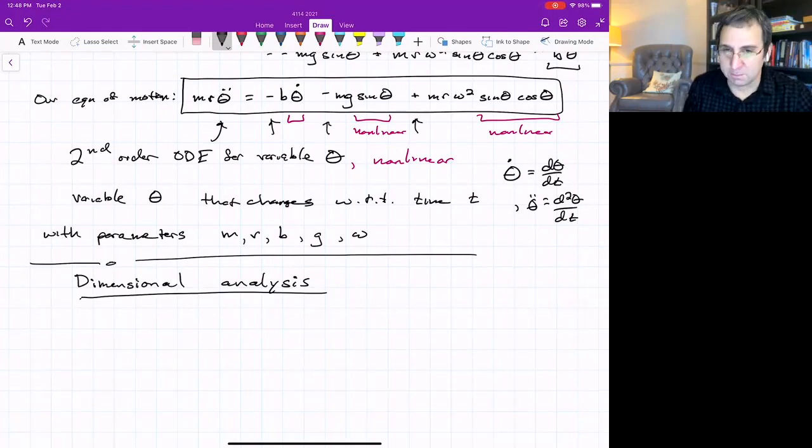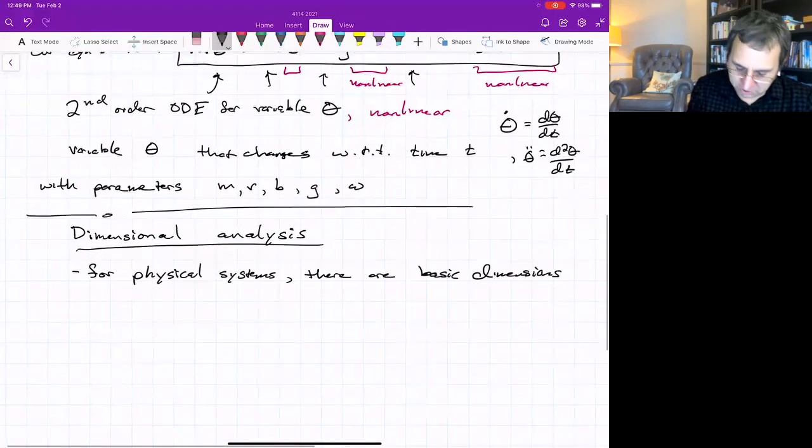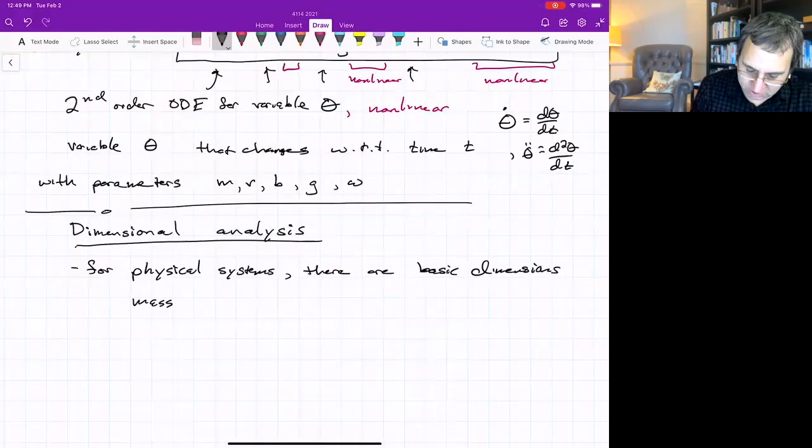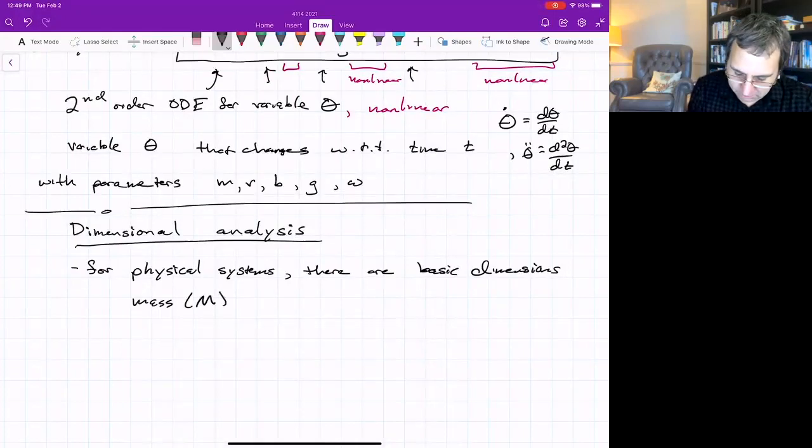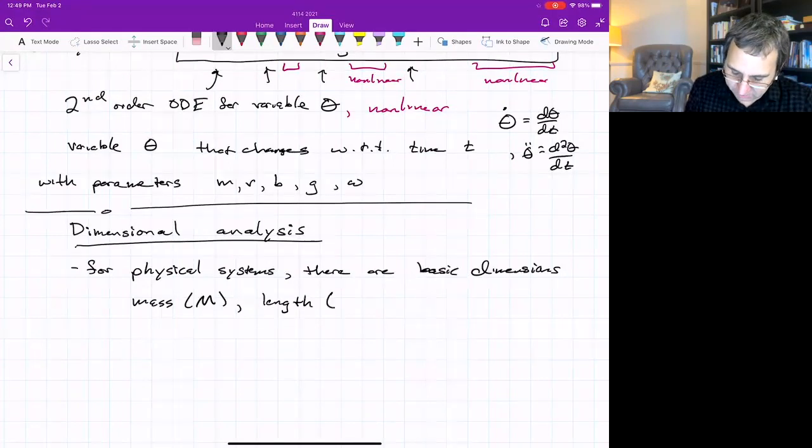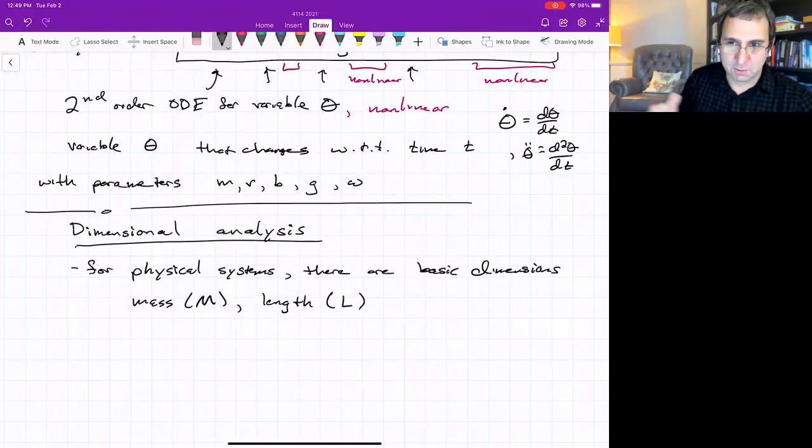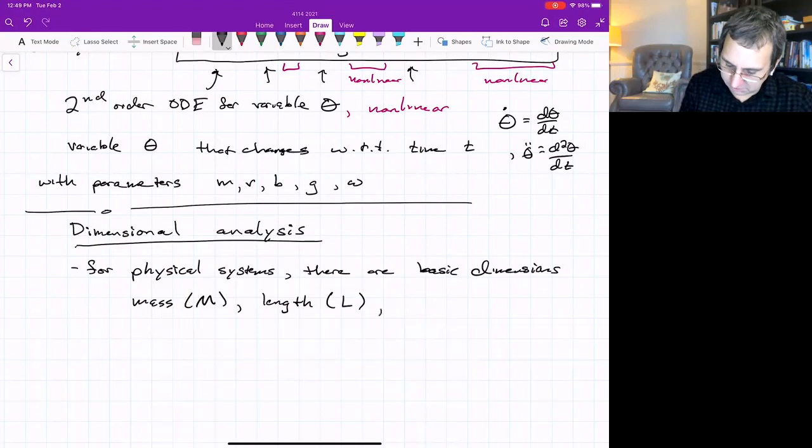For most physical systems, there's a limited number of basic dimensions. And these basic dimensions are mass, and I'll use capital M to represent mass. There's length. Distances can be written in terms of a length. Speeds are length per time. So time, that's another basic dimension. That's kind of it.